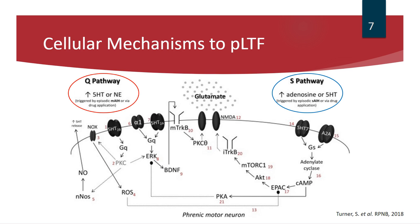There's also a whole other pathway — the S pathway — which is dominant for phrenic LTF when using a more severe hypoxic stimulus, such as 6–9% hypoxia, and is primarily adenosine-dependent via GS-coupled protein receptors. There's a lot of crosstalk between these two pathways, and that work is being done by Gordon Mitchell's lab at the University of Florida. Importantly, all of the studies that identified these mechanisms were done in young adult male rats, leaving open the question of whether the same mechanisms occur in females.